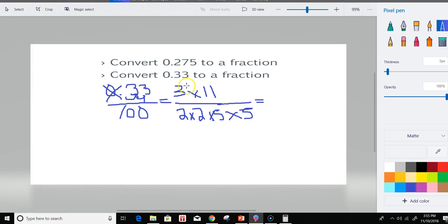We don't have any factors on the numerator or top of the fraction or denominator or bottom of the fraction that are equal, so we can't really get rid of anything. In this case, 33 over 100 will be the fraction of 0.33.